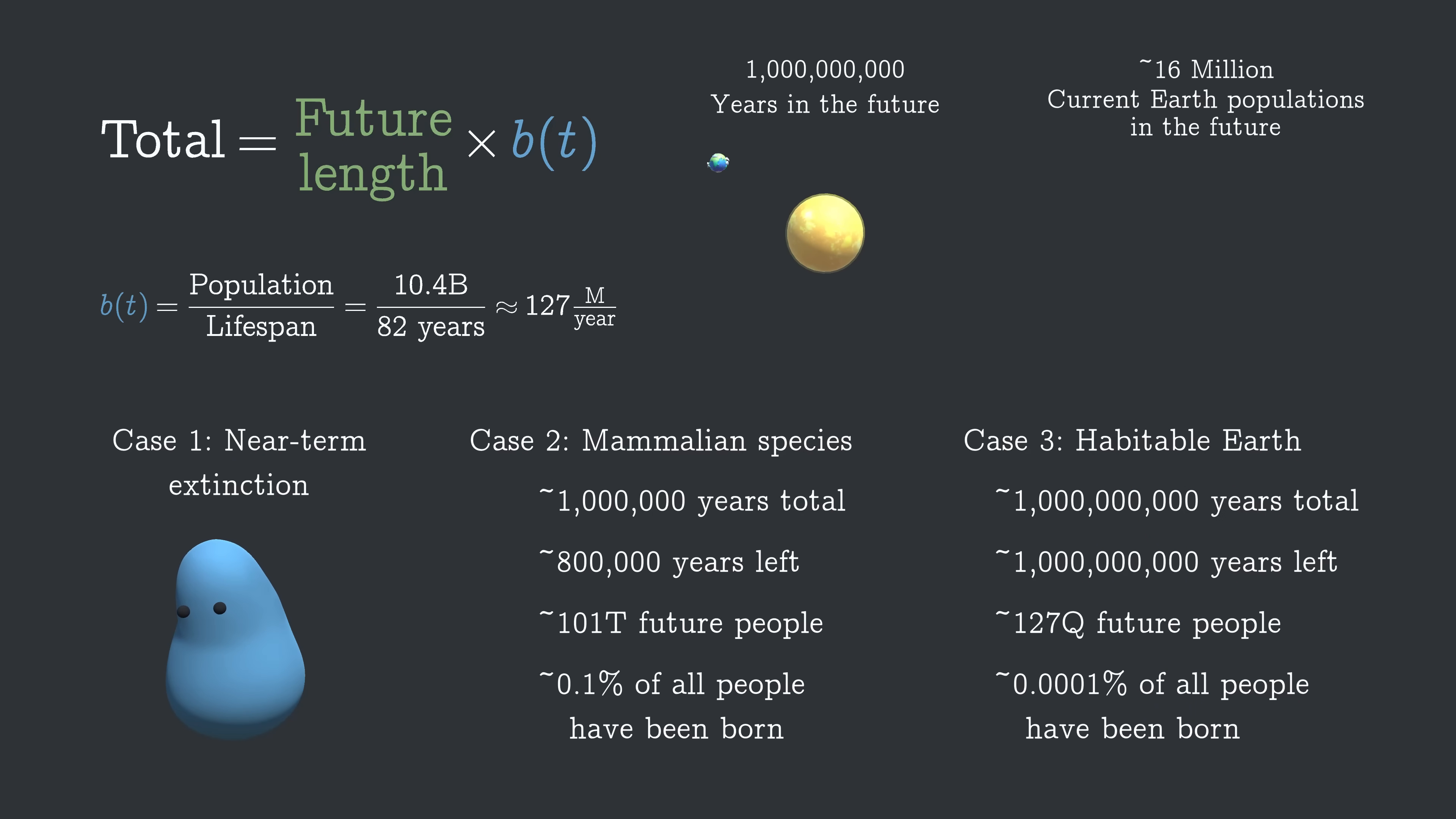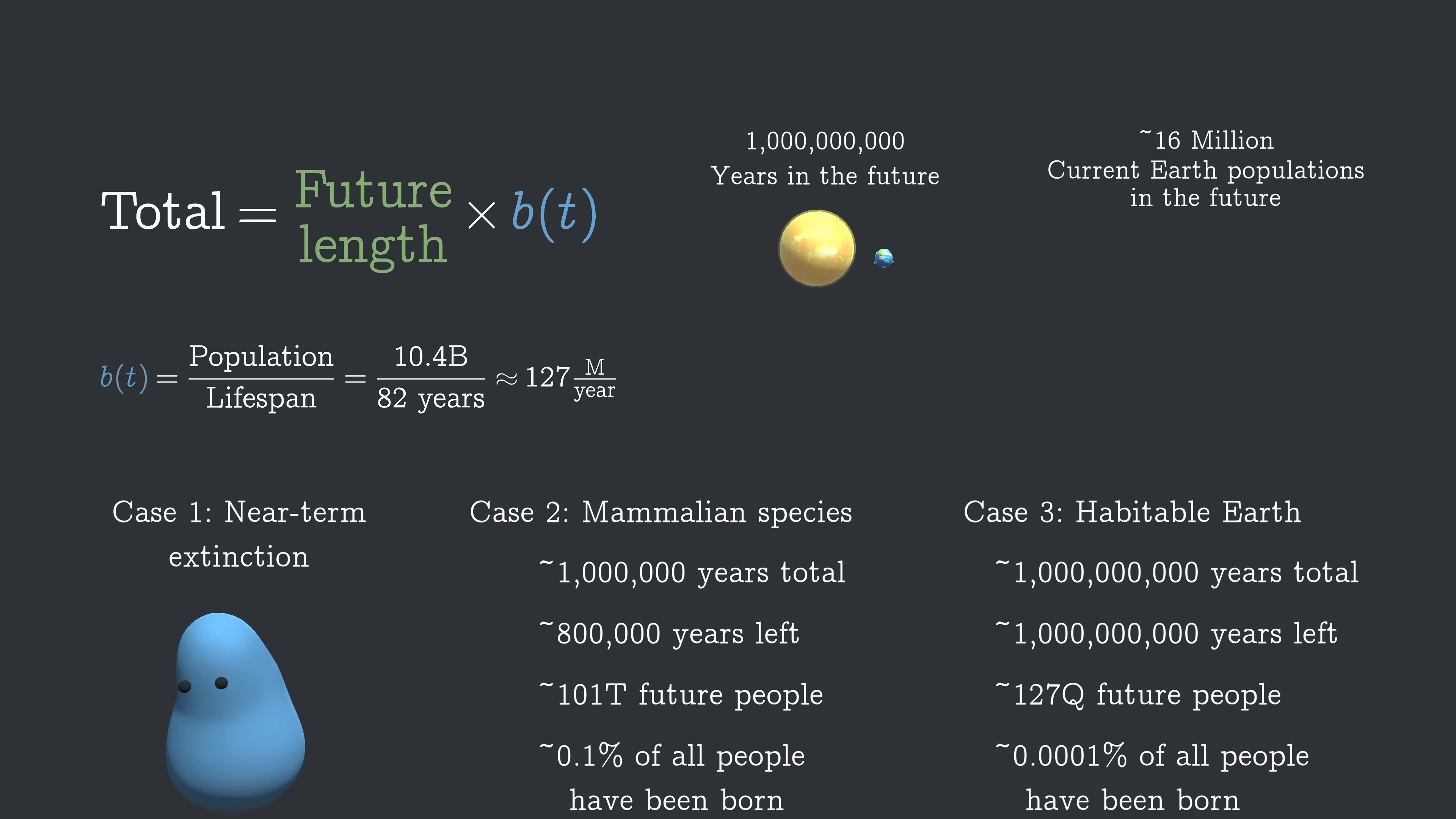Anyway, that's not even the limit. We have the potential to outlast the Earth itself. Based on our understanding of physics, it should be very doable to figure out how to live further away from the Sun as it gets brighter. On Mars, or the moons of Jupiter, or even in structures we create and put into orbit ourselves.